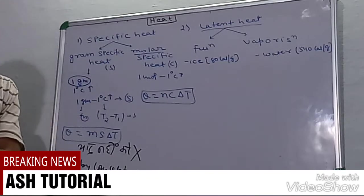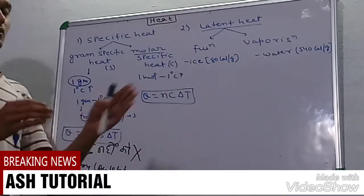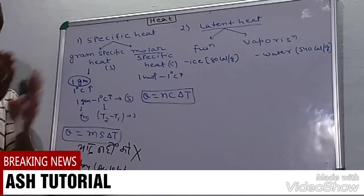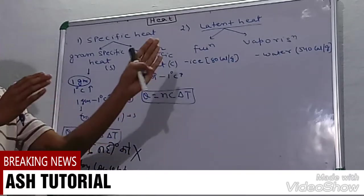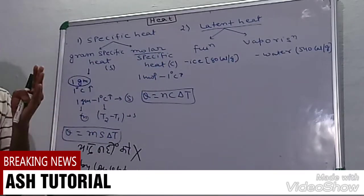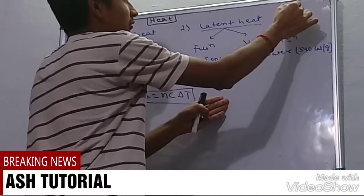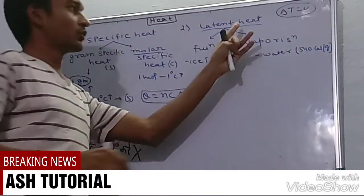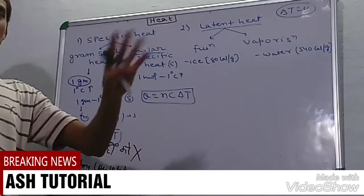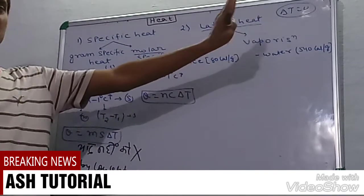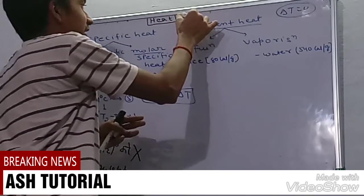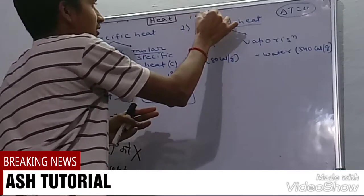When we convert one substance from one physical state to another, it occurs in the process known as isothermal process, so delta t will always be zero. No change in temperature. Ice is at zero degree centigrade, when it converts into water it is also at zero degree centigrade.